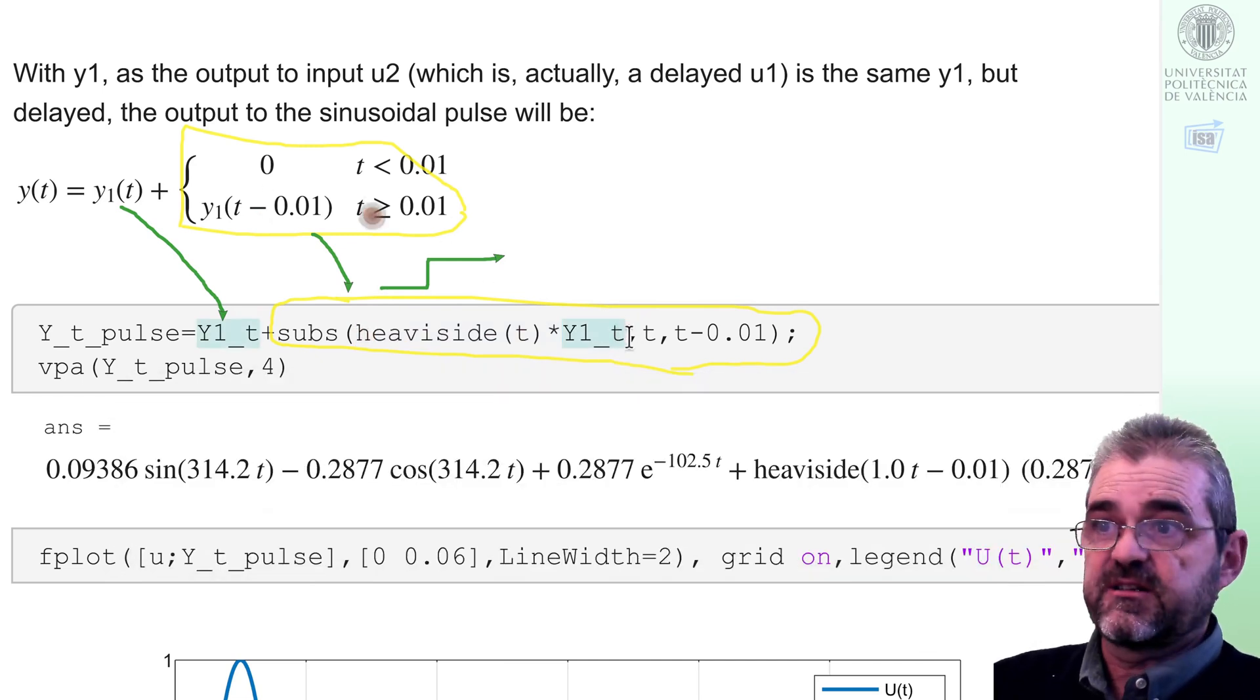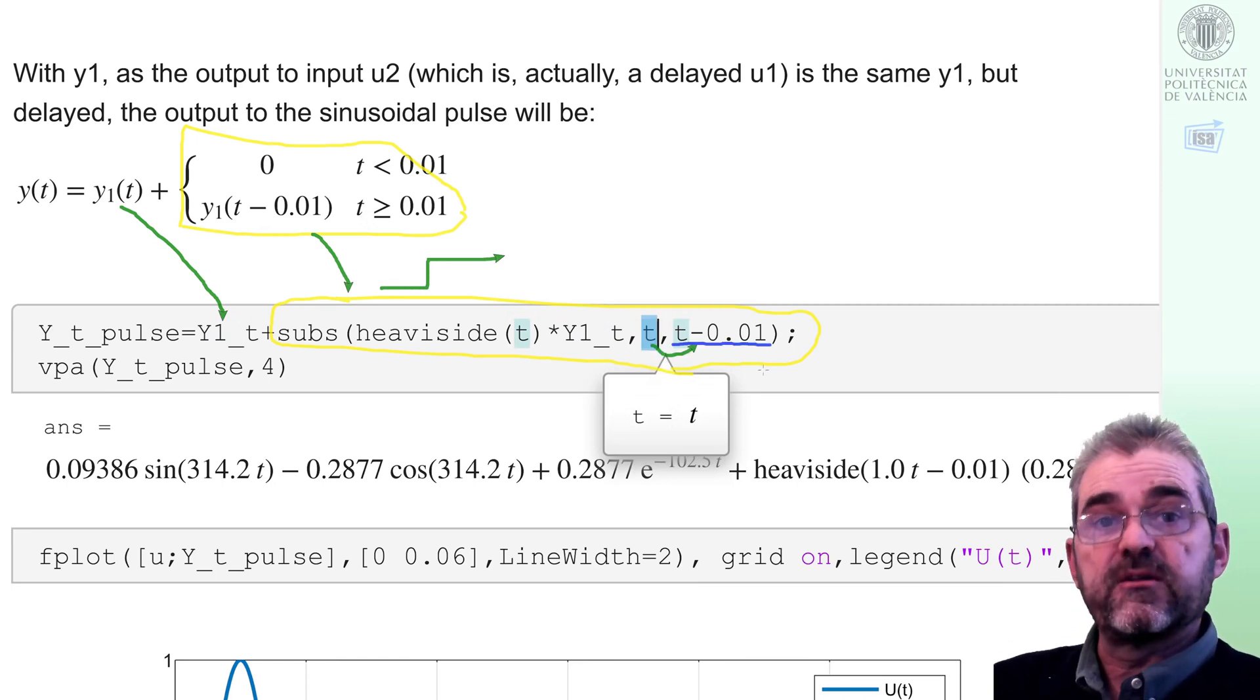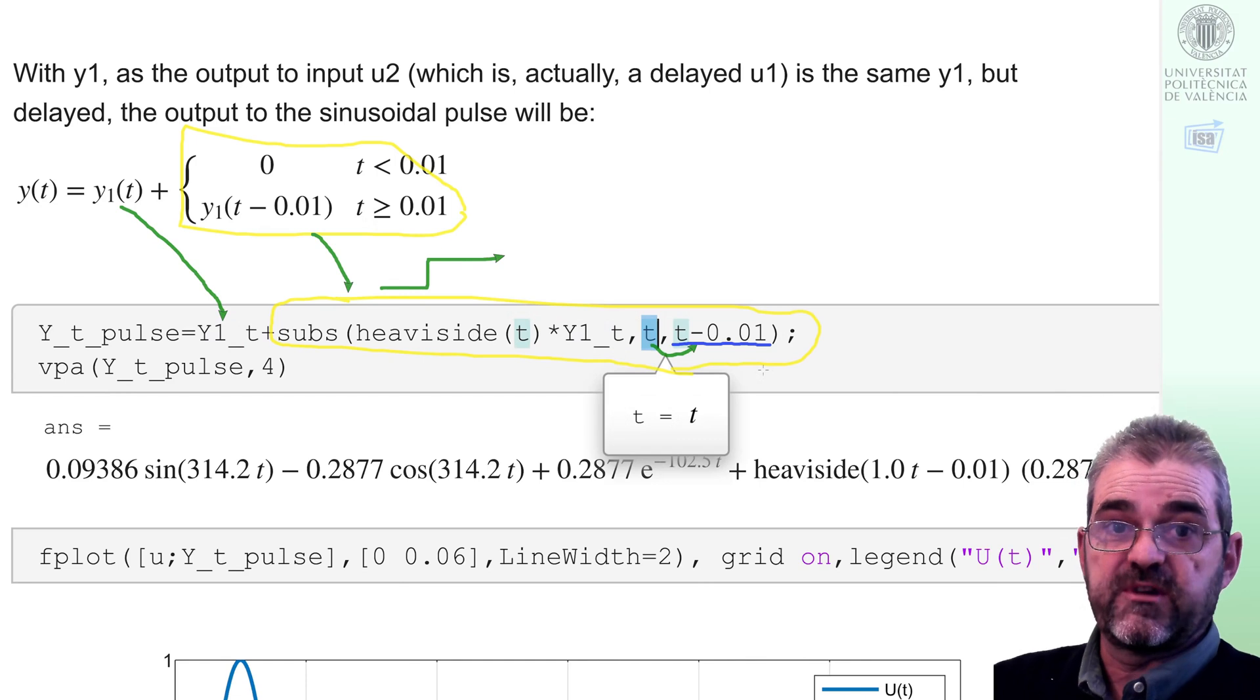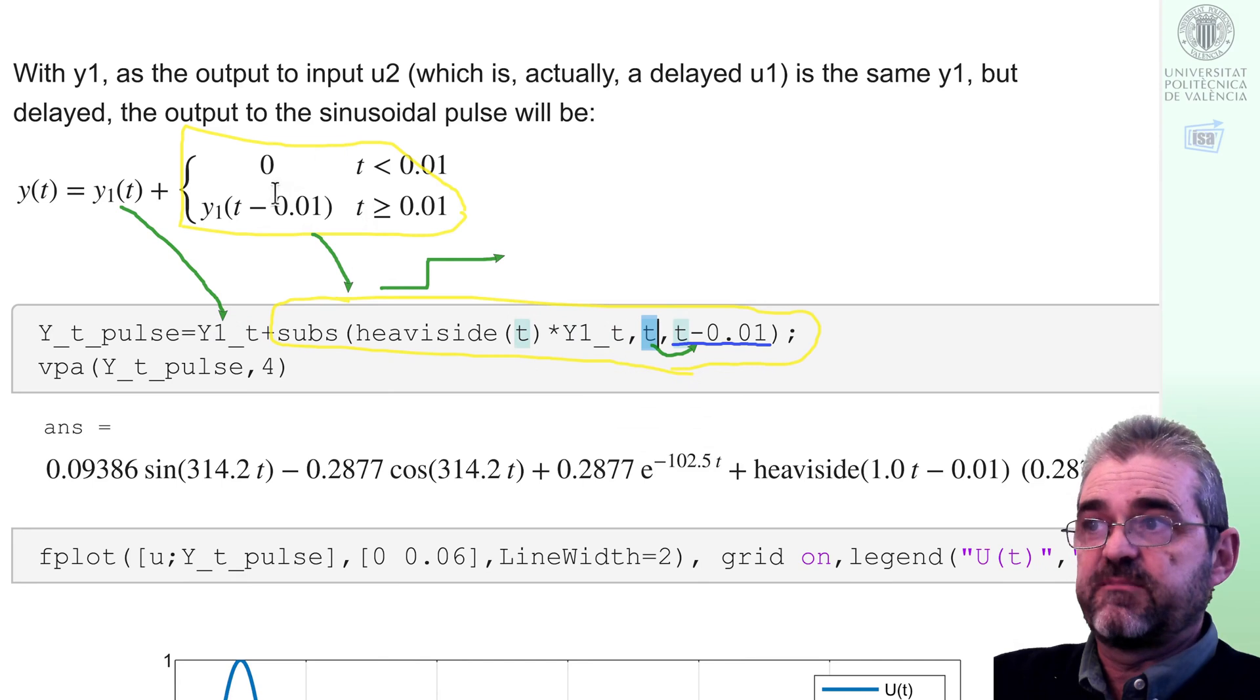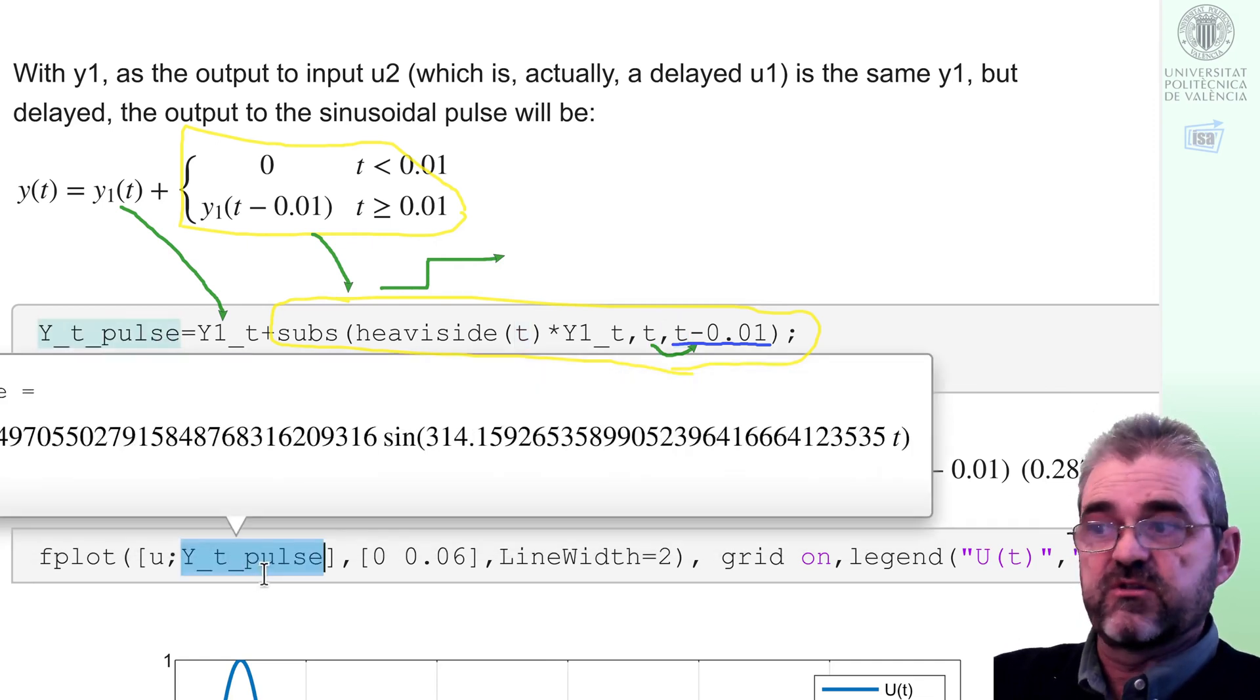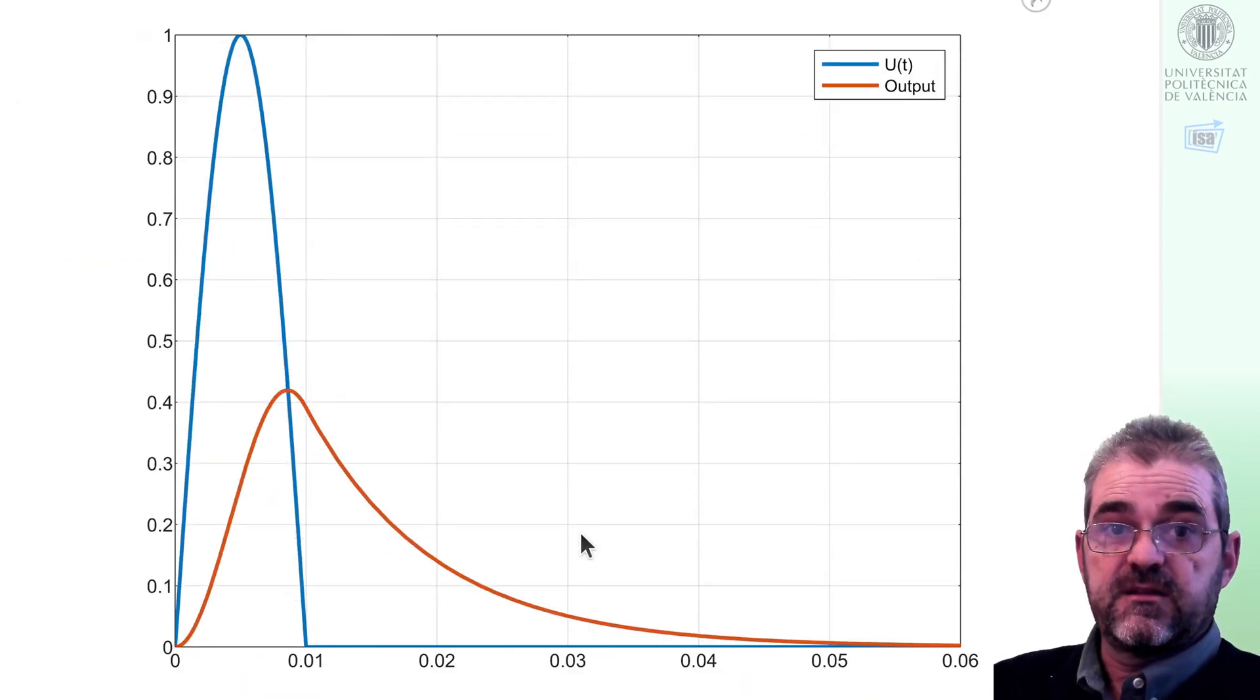And then the delay stuff is substituting t by t minus 0.01 to accomplish the delay. So this is the way to encode MATLAB the yellow highlighted fragment of the solution. So once I have yt pulse, then I can just use fplot to plot it. And indeed I obtain the red output superimposed to the pulse input.